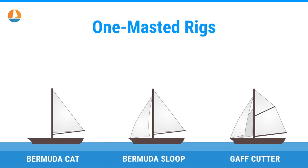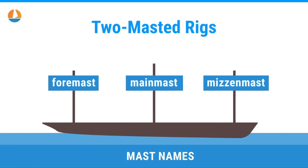Now it gets interesting, because now we're going to look at two-masted rigs. To understand two-masted or three-masted rigs, we have to look at the mast names. The thing about adding an extra mast is you have to decide where to put it. You have the mainmast in or around the center, and then you have the option to put an extra mast in front or behind the mainmast. This actually means a lot to the type of boat. The three mast names are foremast, mainmast, and mizzenmast.